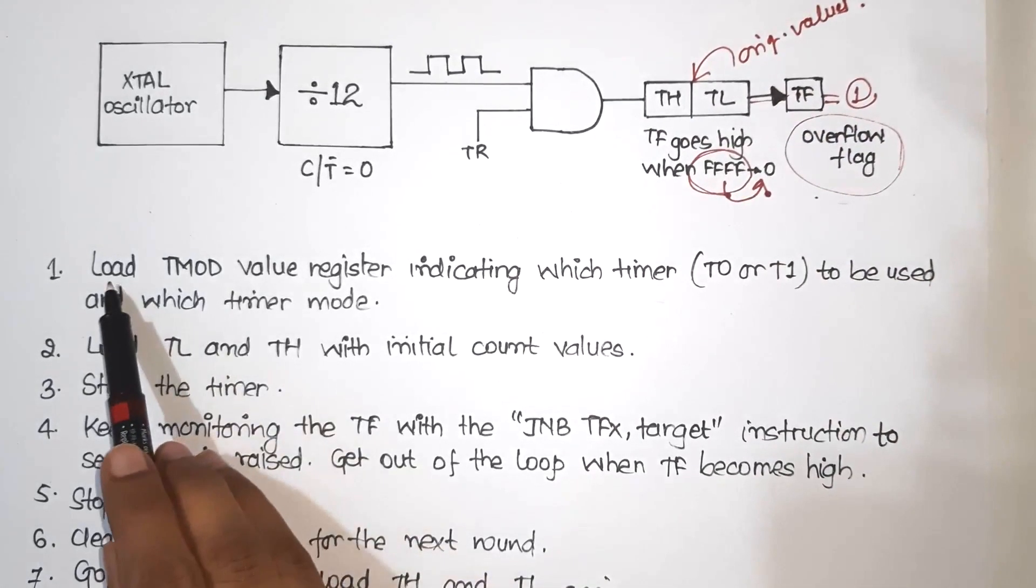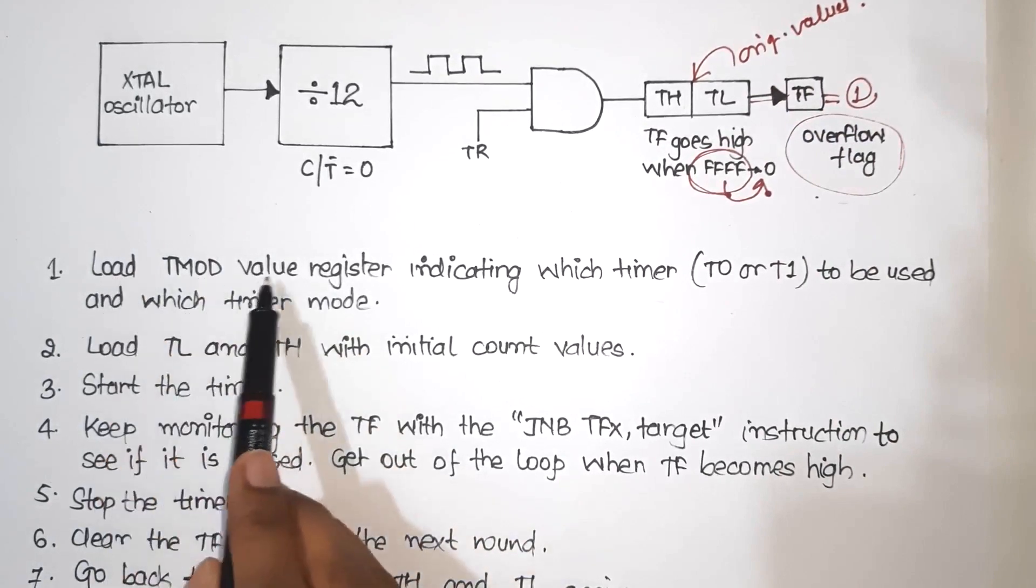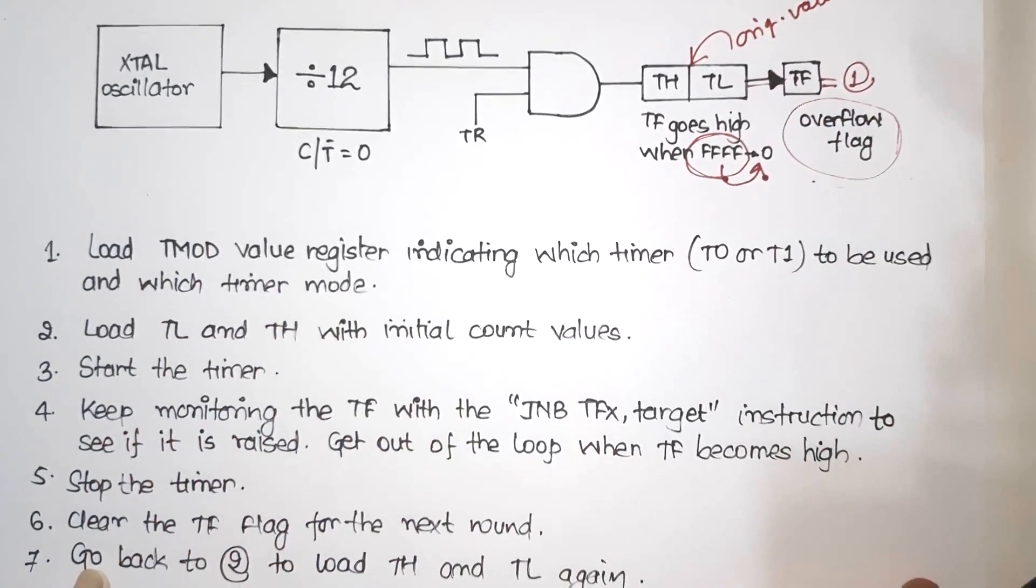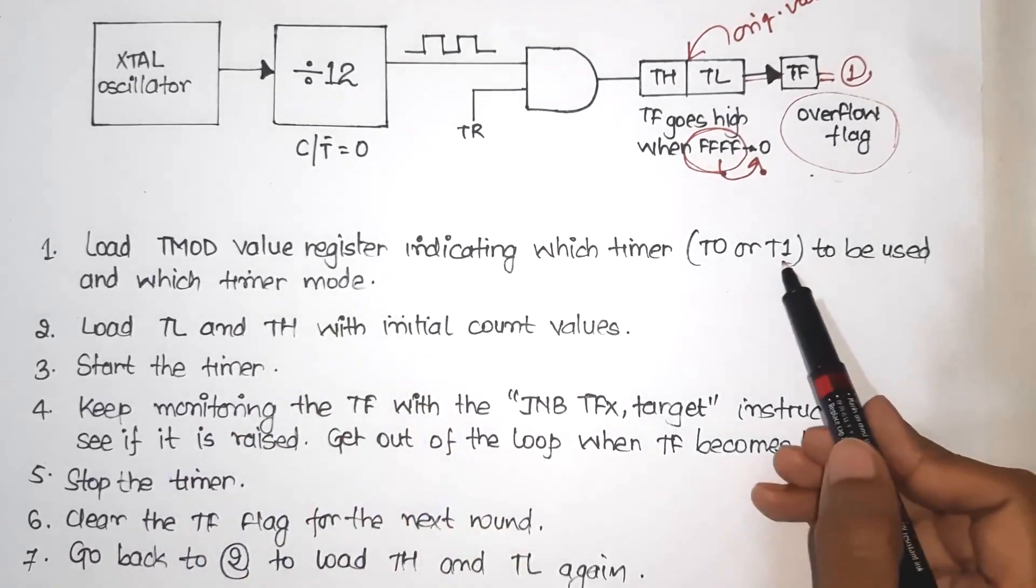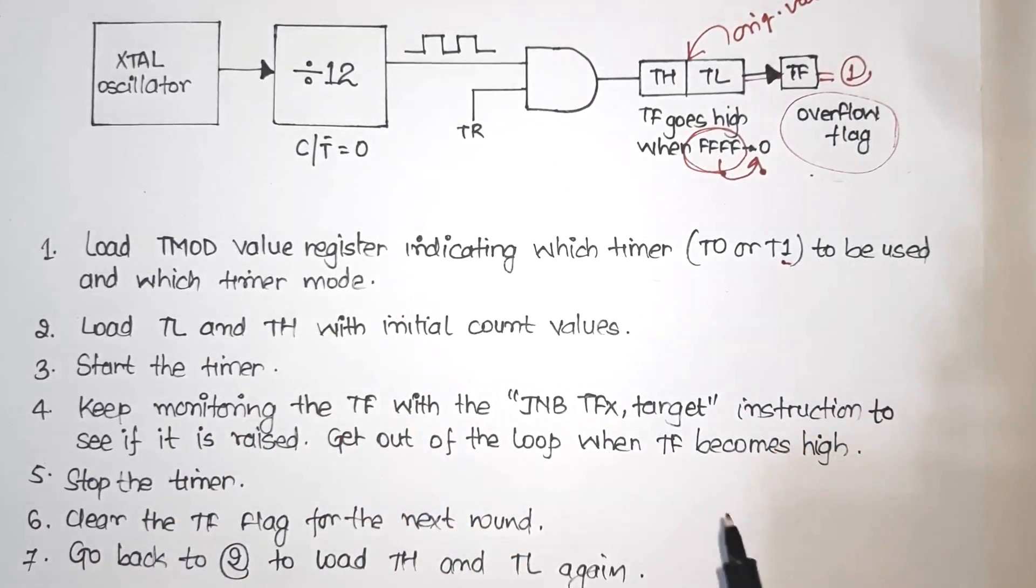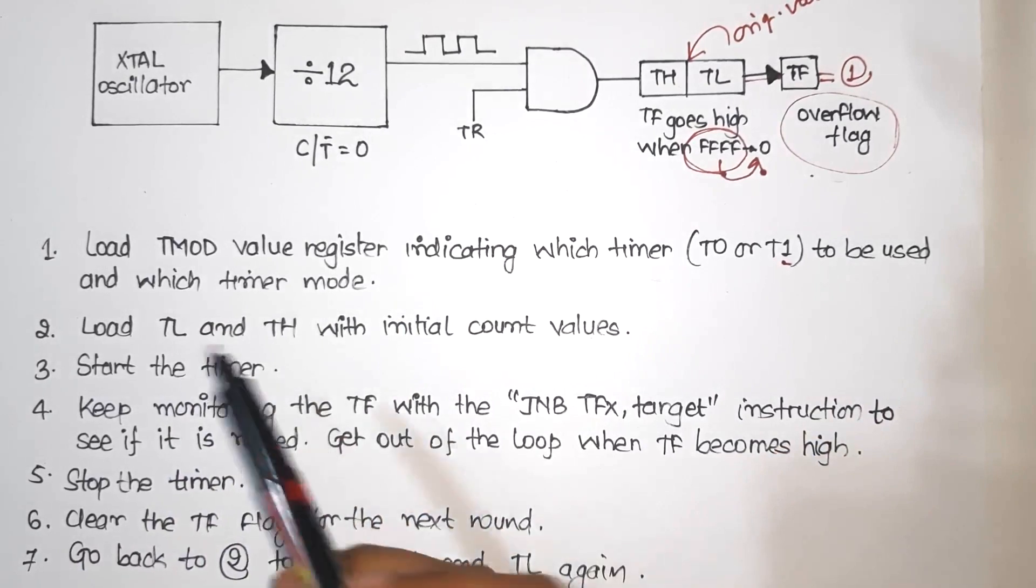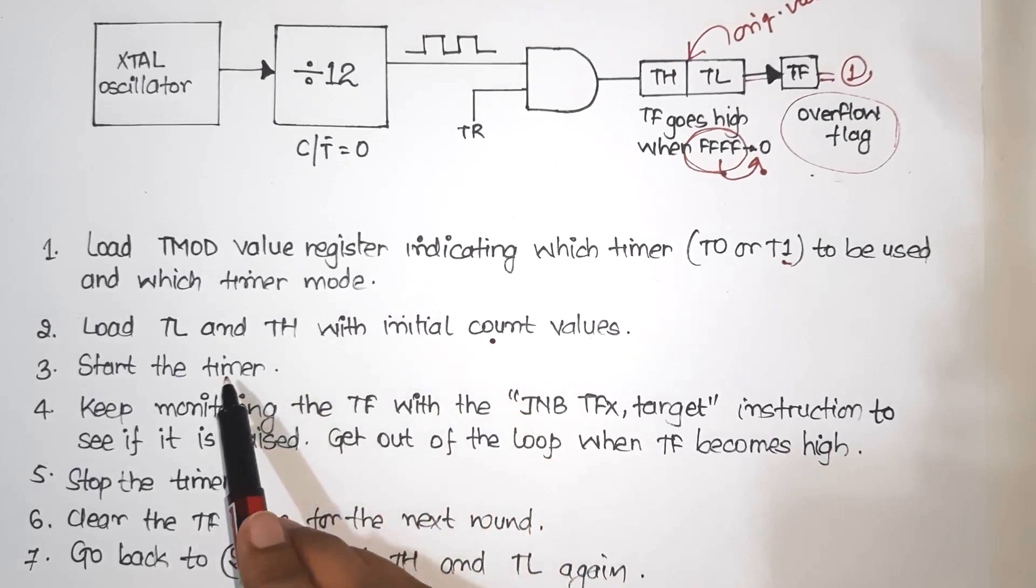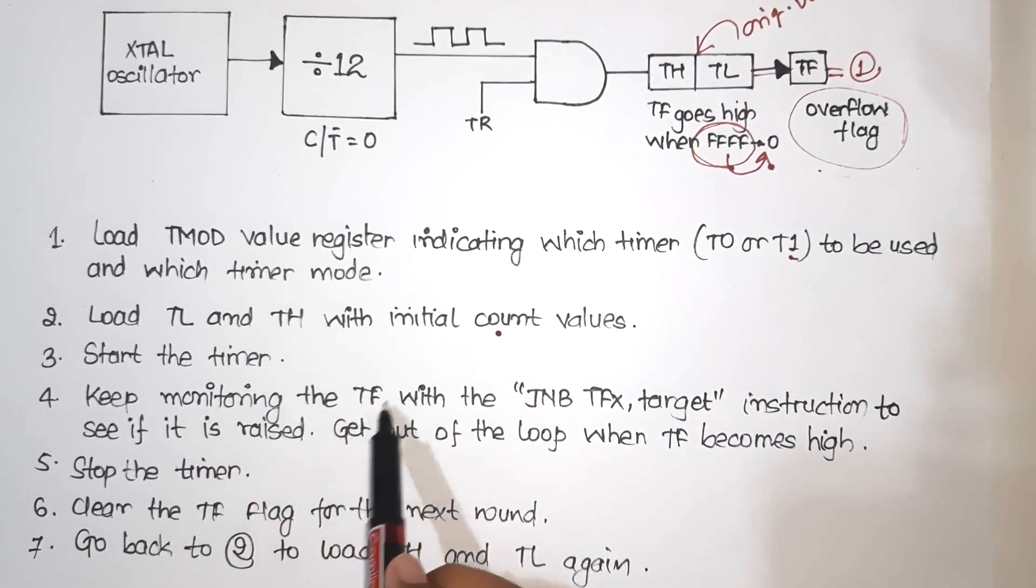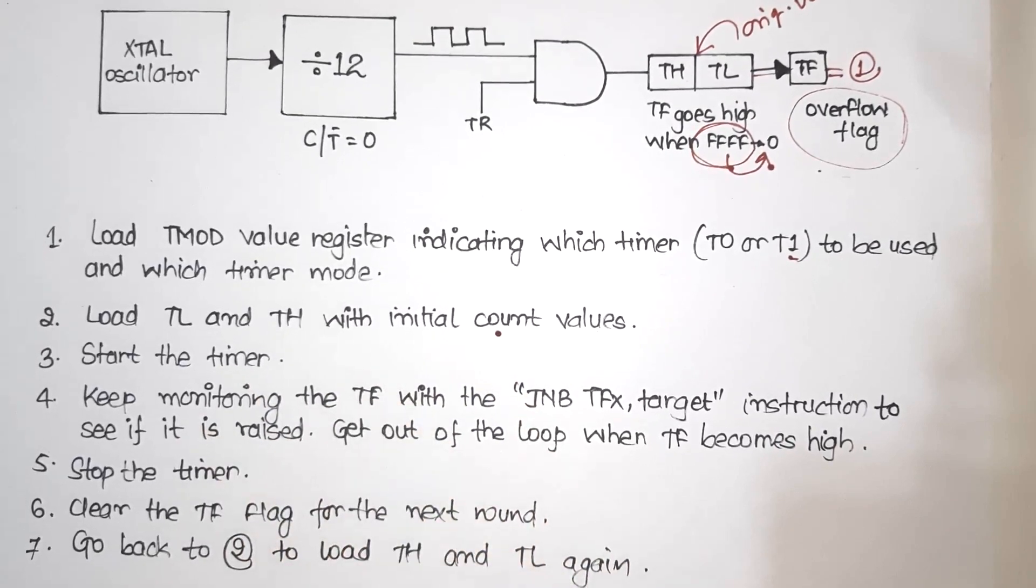So what are the different steps? First is load TMOD value register indicating which timer to be used and which timer mode. Which timer we have to use and which mode we have to use. Next, TH and TL, we will add initial count. Then we will start the timer and monitor the TF flag to see if it reaches its maximum value.